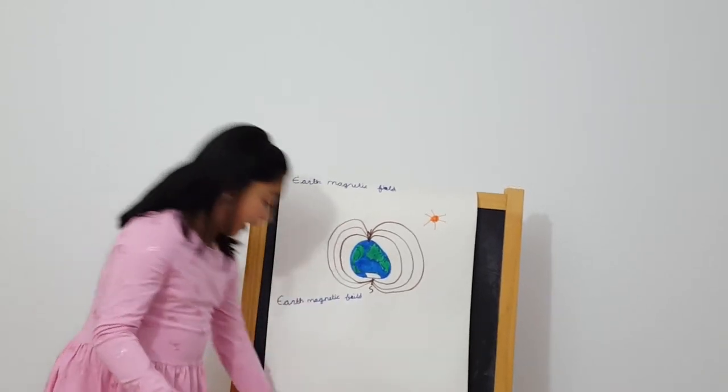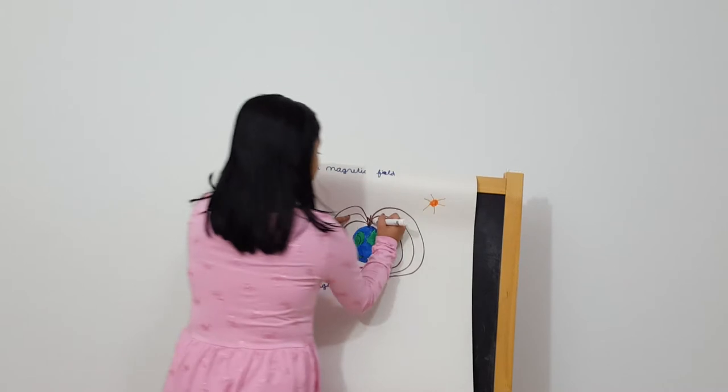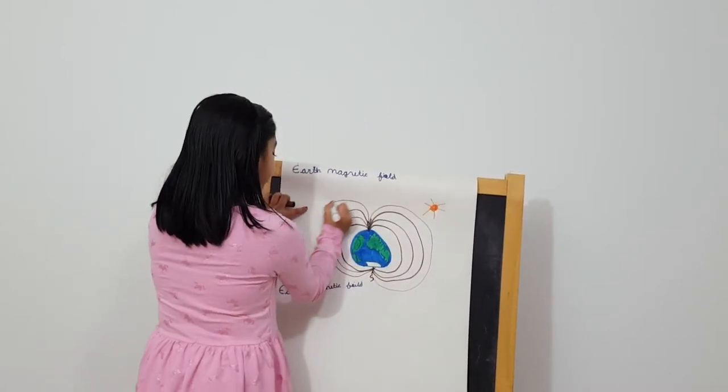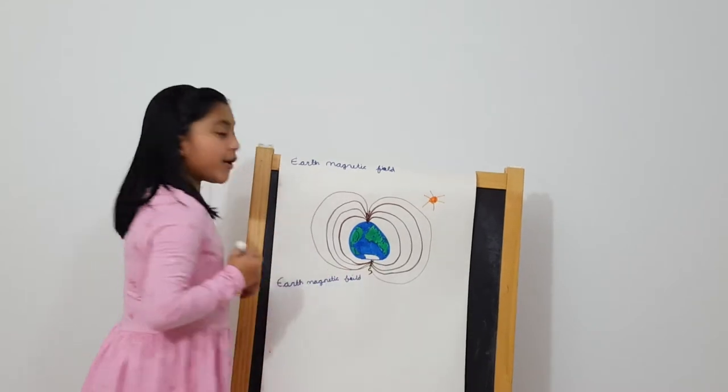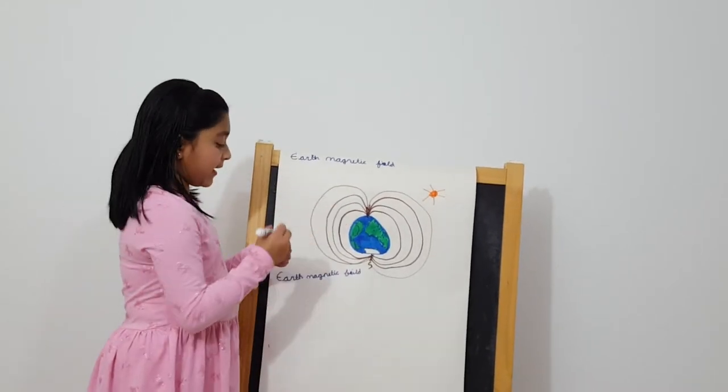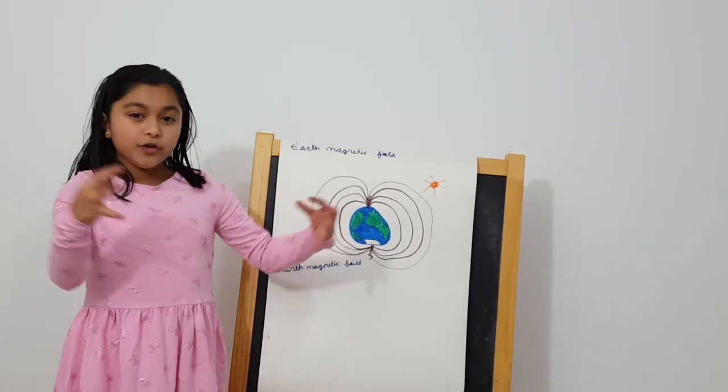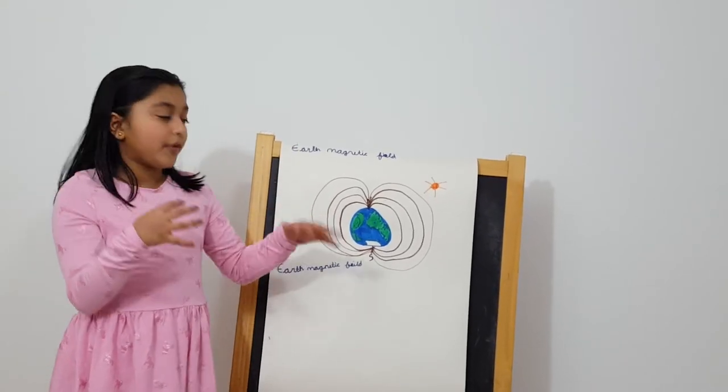But before it flips, I can say the magnetic field, it grows, so I have to draw more as it grows. So as time goes, the Earth's magnetic field, it starts from very weak, but it doesn't become too powerful that it can stop from getting flipped.